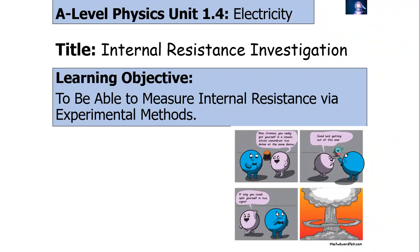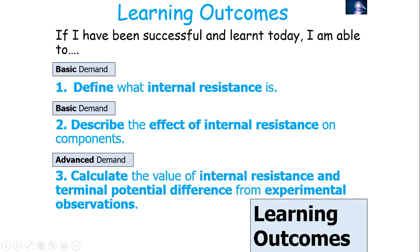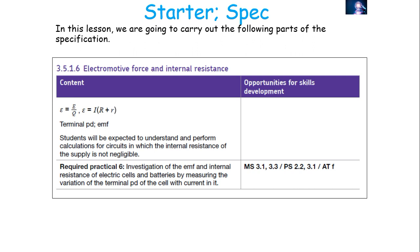Welcome to this lesson on how to determine the internal resistance of a power source via experimental methods. In today's lesson, we will be looking at defining what we mean by internal resistance, describing the effect of internal resistance on components, and then calculating the value of internal resistance and terminal potential difference on experimental observations, which links into the specification focusing on required practical 6 of the A-level course — the investigation of EMF and internal resistance of electrical cells and batteries by measuring the variation of the terminal PD of the cell with current in it.